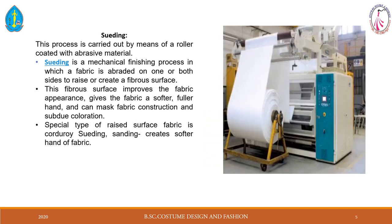The sanding process is carried out by means of a roller coated with abrasive material. Here I have shown the sanding machine. The fabric surface is passed against the rough abrasive surface and the fabric is abraded on both sides, making the fabric softer and giving it a fuller hand. The fabric construction and coloration also change. The special type of raised surface fabric produced is called sueding. Sanding creates a softer hand on the fabric.